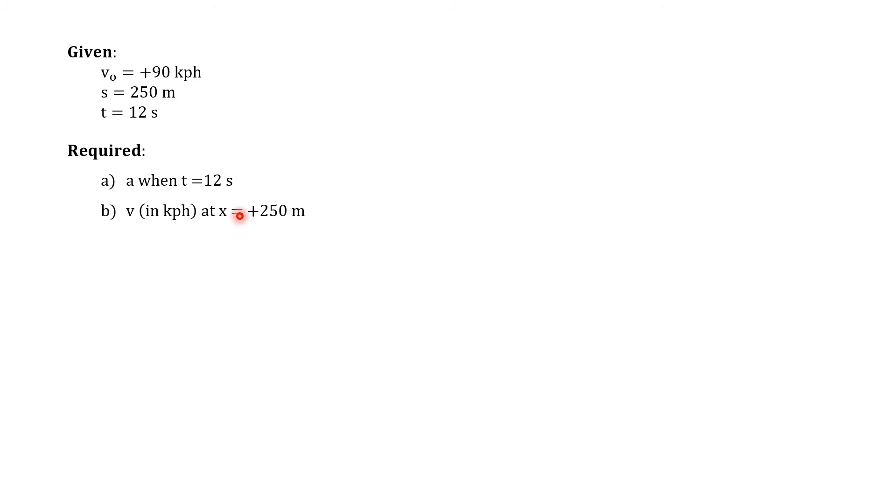And also the final velocity when the motorist arrives, at x, the final position equal to positive 250 meters. So again, this final position has a positive sign because our convention is that vectors to the right are positive.